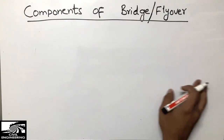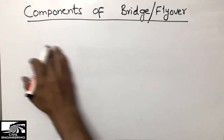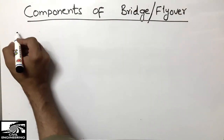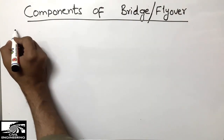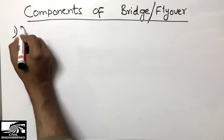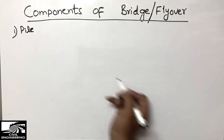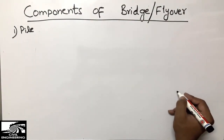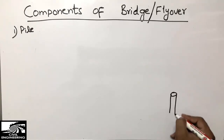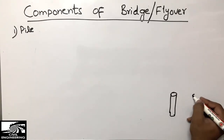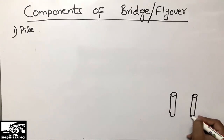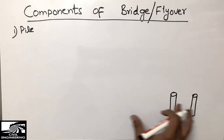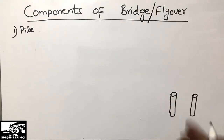I will draw the picture here, label it, and name the components. The first and most important component of the bridge is the pile. Piling is the most important and expensive part of bridge or flyover construction. First we do a site investigation, then we do the piling according to the structure of the bridge — either bearing piles or friction piles.